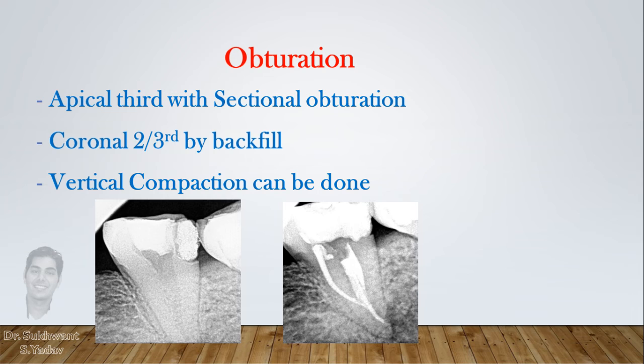For obturation, the apical part of the canal can be obturated with sectional obturation, and the rest of the canal should be backfilled with molten gutta-percha. Alternatively, you can obturate the canal with vertical compaction technique.